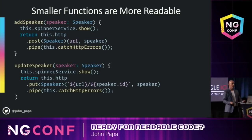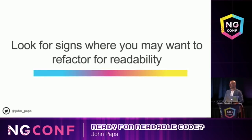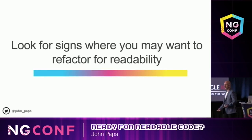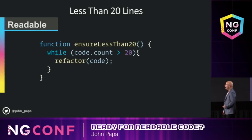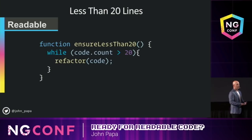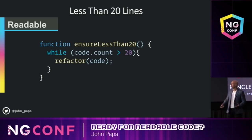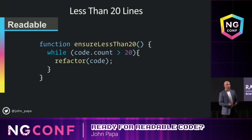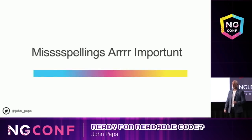Breaking things out into more functions — constant iteration. You want to look for signs where you should refactor for readability. Less than 20 lines is a general guideline. It's not hard and fast, but if it's too big — some people say it can't be off screen, some say no more than 10 lines — it really depends on your company guidelines. It helps you read through code faster. Once you get beyond that mark, you start seeing signs that maybe your code is doing more than one thing. Maybe it's time to refactor just a little bit.